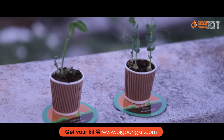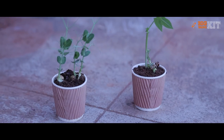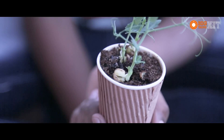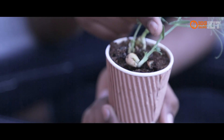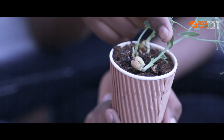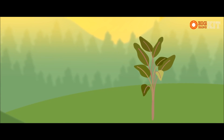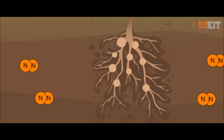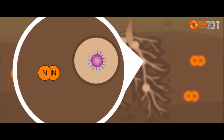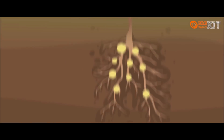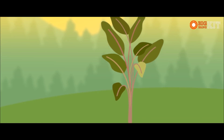The rhizobium bacteria will create root nodules. This is the root nodule structure. In this process, the rhizobium bacteria will convert nitrogen into ammonia. This ammonia will help the plants grow, and the nitrogen will also feed the plants as well as animals.